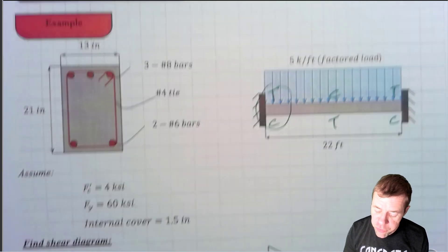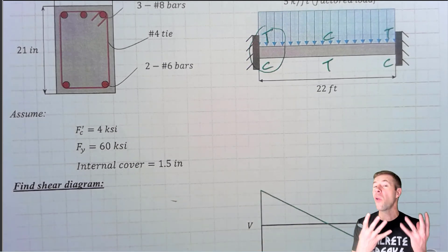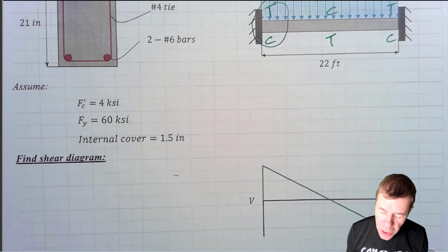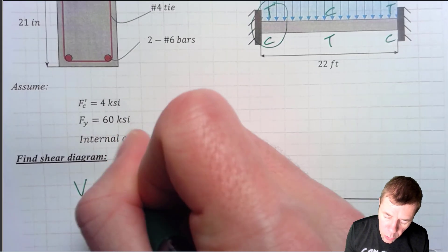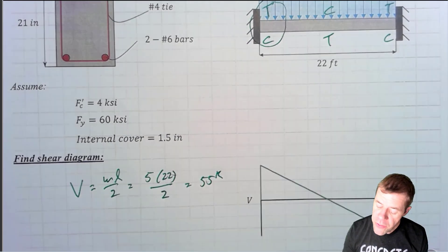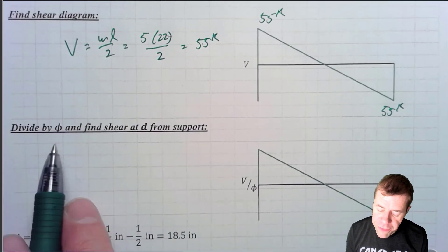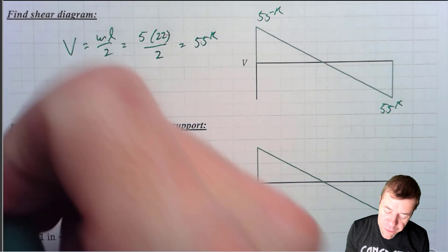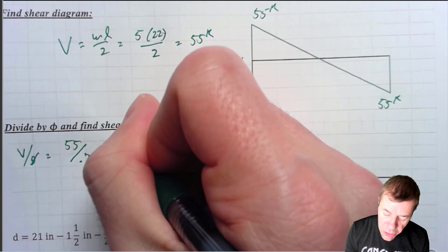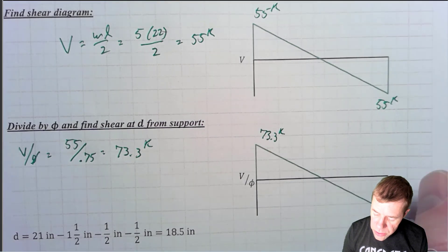We're using 4 KSI concrete, 60 KSI steel. Our clear cover is 1.5 inches. The first thing you're going to do is find the value of your shear diagram. V equals wL over 2, which is 5 times 22 over 2, and that equals 55 kips. That means the shear at each support is 55 kips. Now we find Vu divided by φ, which equals 55 divided by 0.75, and that is equal to 73.3 kips.